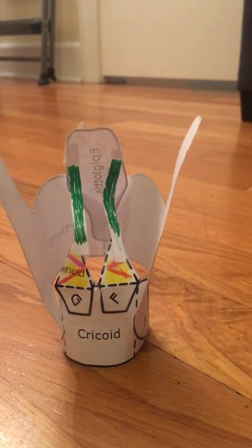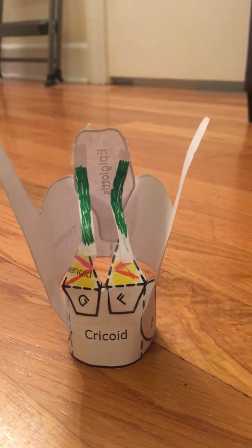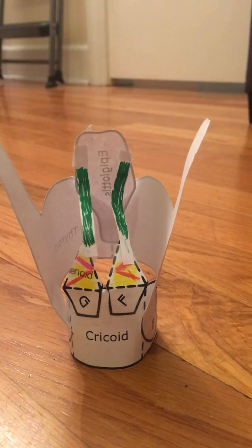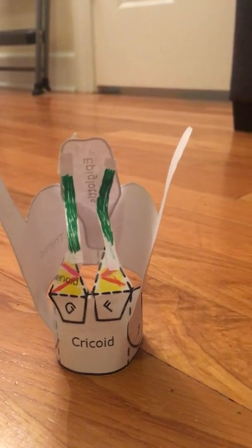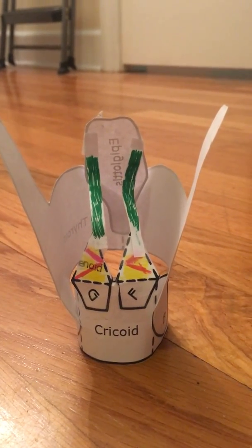For speech, which is another major function of the larynx, when the arytenoids are adducted, they pull the vocal folds closer together, which allows for phonation—the basis for speech.